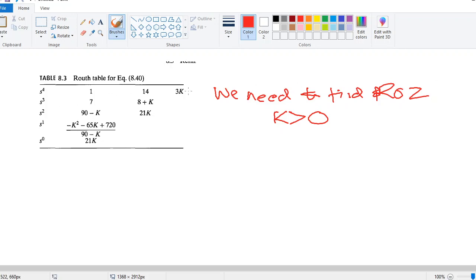We cannot have a row of zeros for s^4 because 1 and 14 are non-zero terms. Same is the case for the s cubed row because 7 is a non-zero term. When you come to the s squared row, there is a possibility because you have K in both terms. First case, 21K for it to be zero, K needs to be zero. And 90 minus K, for it to be zero, K should be equal to 90.